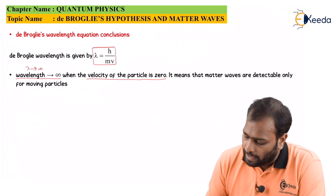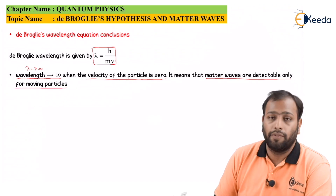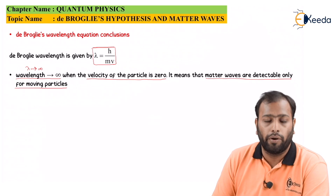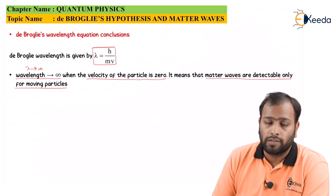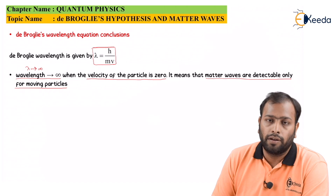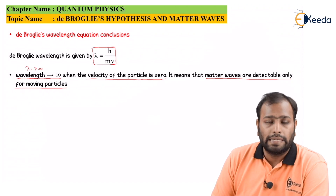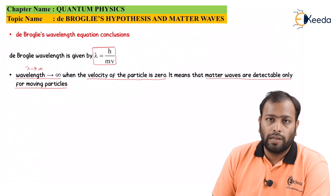It means that matter waves are detectable only for moving particles. This is very important. Can matter waves be detected for something stationary? No. If an object is kept stationary forever, it will not have any matter wave. Matter waves exist only for objects which are moving — they may be moving at a fixed point, but they must be moving.